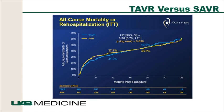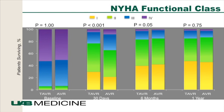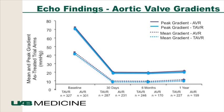Functional class was good in both categories: majority came in at class III and IV, and at one year, majority were class I to II. The valve gradients were similar — mean gradients dropped significantly and stayed low, and valve areas went up. So that was data on the Edwards Sapien valve.